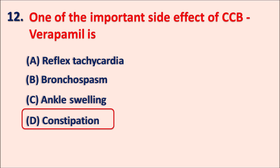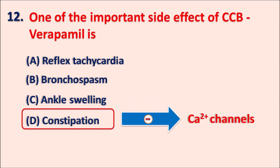Verapamil is a calcium channel blocker that can block calcium channels at different sites, including the GI smooth muscle, thereby decreasing GI motility and resulting in constipation. This drug can also inhibit the rate of conduction of the heart, resulting in bradycardia, but it will not produce tachycardia. Reflex tachycardia is produced by another type of calcium channel blocker like nifedipine and amlodipine. Ankle swelling is observed with direct vasodilators like nifedipine and amlodipine, and bronchospasm is not a significant side effect of verapamil. So constipation is the right answer.